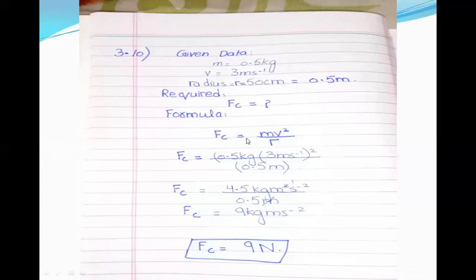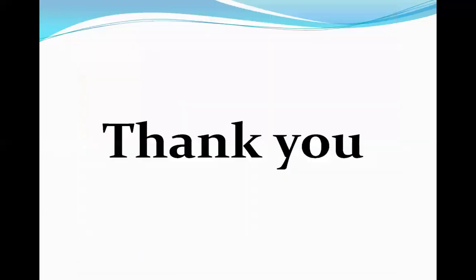The formula for centripetal force is Fc equals mv squared over r, given on textbook page 78. Putting in m equals 0.5, V equals 3 meters per second, and r equals 0.5, and simplifying: Fc equals 9 Newton, because the unit of force is Newton. Thank you.